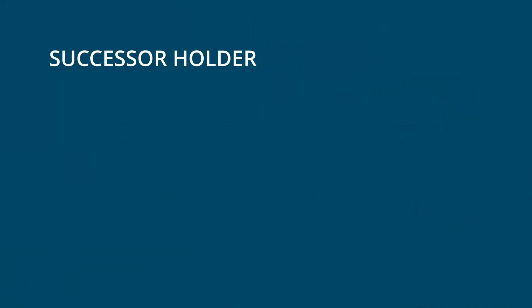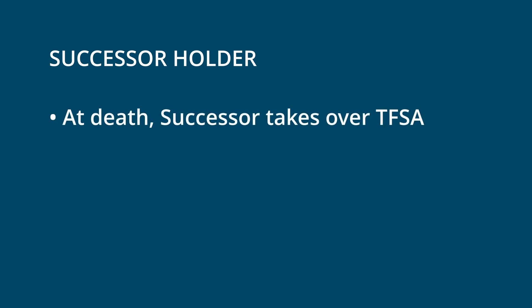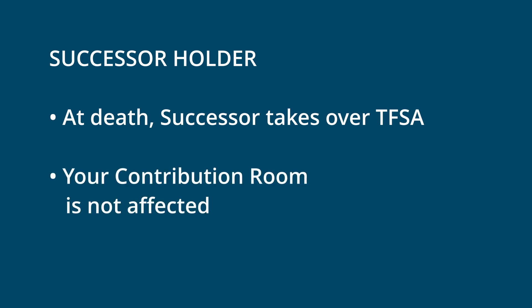If you are married or in a common law relationship, you generally want to be designated as a successor holder, not just a beneficiary. When you're named as a successor holder, when the person dies that TFSA becomes yours immediately — there's no transfer, no tax, and no gap from when the person passes away until the money goes into your name. Another key factor: as a successor your room in your TFSA is not affected, so if you're already maxed out, you can inherit an entire new tax-free savings account fully maximized without affecting your own room.